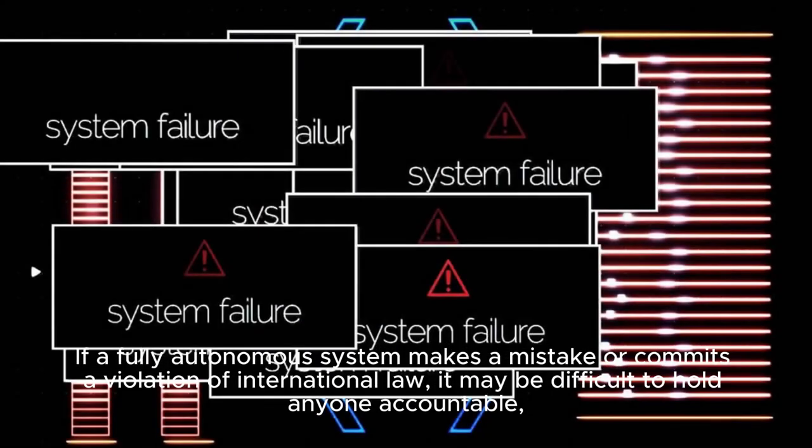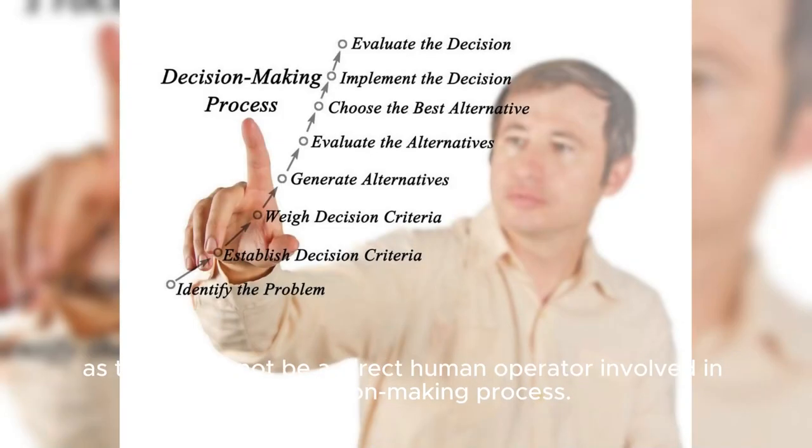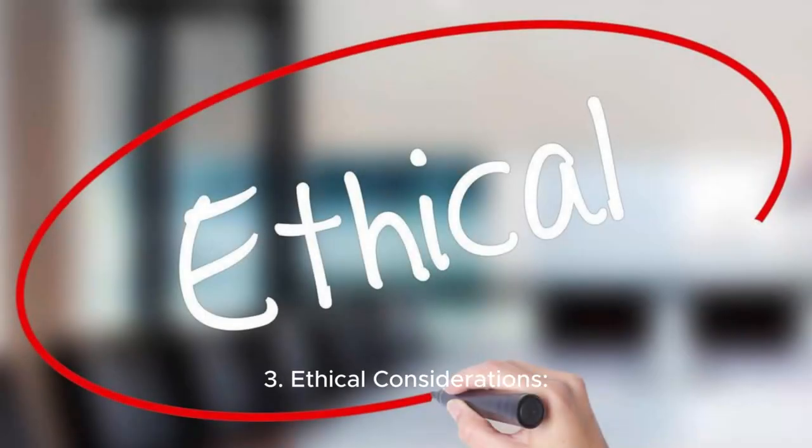If a fully autonomous system makes a mistake or commits a violation of international law, it may be difficult to hold anyone accountable, as there may not be a direct human operator involved in the decision-making process.